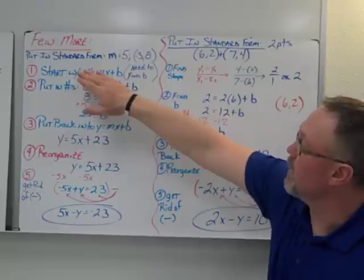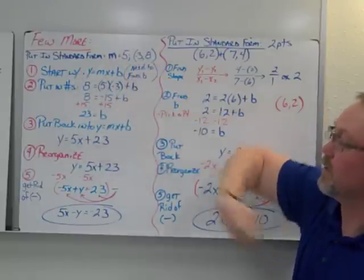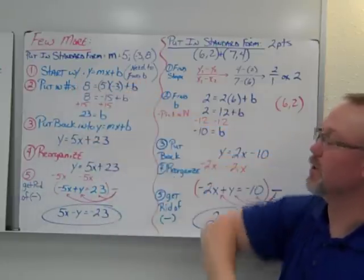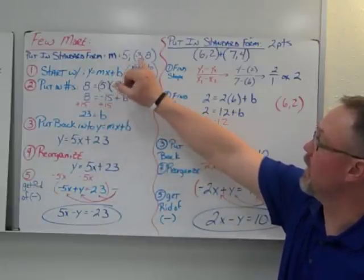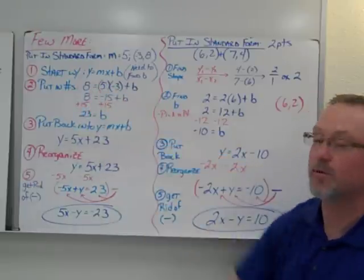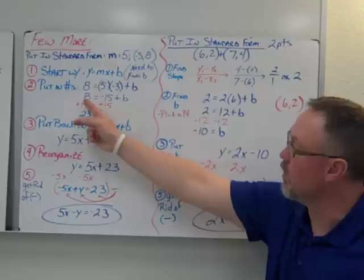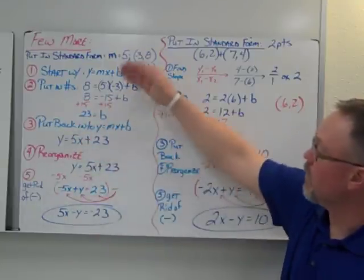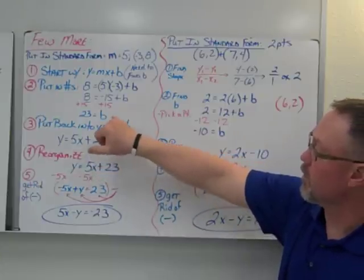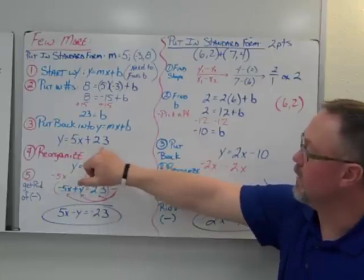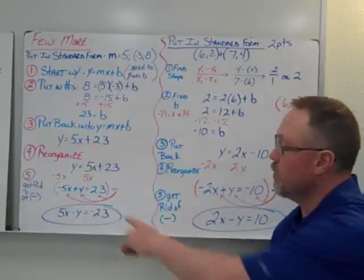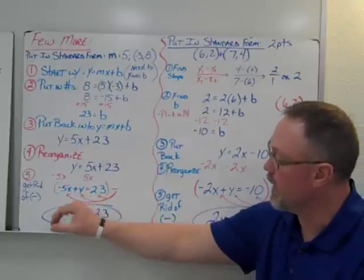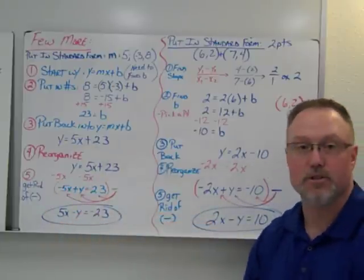If you're given a slope and a point, it's a bit more involved. You start with y equals mx plus b and solve for b. You know the slope, and you know an x and y value, so you plug those into the right letters and solve — moving the 15 over gives us b equals 23. Then you go back, put your b and slope back into y equals mx plus b, reorganize into standard form by moving the 5x over. We end up with a negative coefficient out front, so we distribute a negative throughout, which simply changes all the signs.